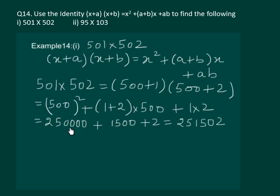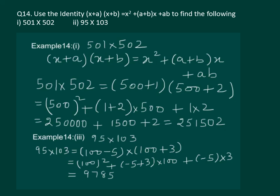Now, it remains to solve and we get the required answer as 251502. Similarly, we can use identity number 4 to solve 95 multiplied by 103 which can be written as 100 minus 5 multiplied by 100 plus 3 and now we can substitute x as 100, a as minus 5 and b as plus 3. On substituting the values in our identity and solving we will get 9785 as the required answer.